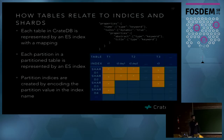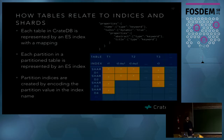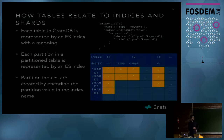A CrateDB table is always represented by at least one Elasticsearch index with a mapping. If it's not partitioned, it's just one index. Each index in Elasticsearch has a mapping which looks like this: for every column you have the name and some attributes — for example 'keyword' is a simple string type. You can also have nested properties, which correspond to the objects we saw previously.